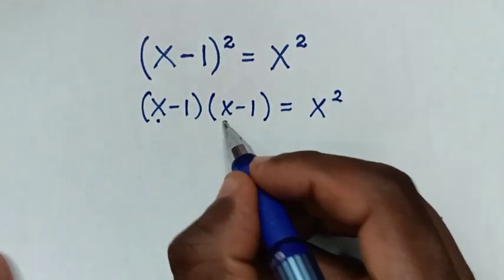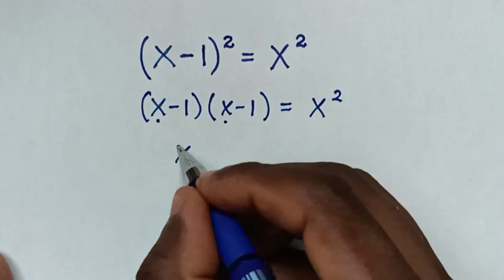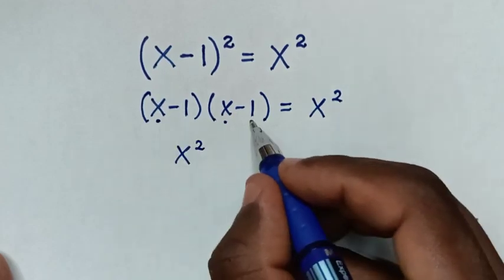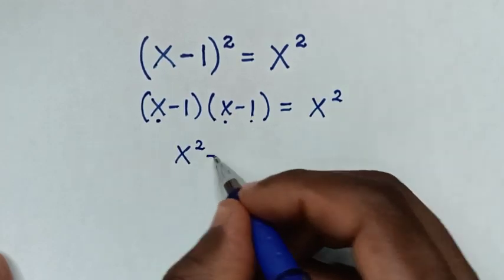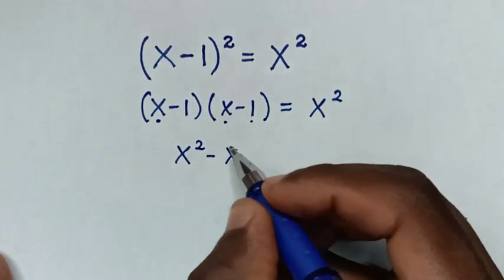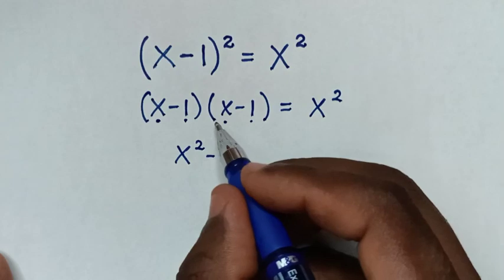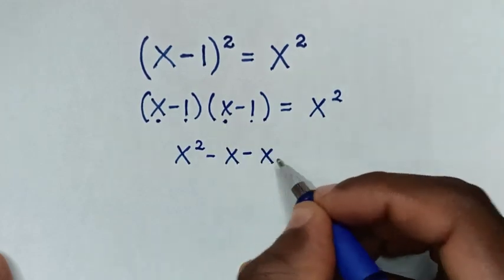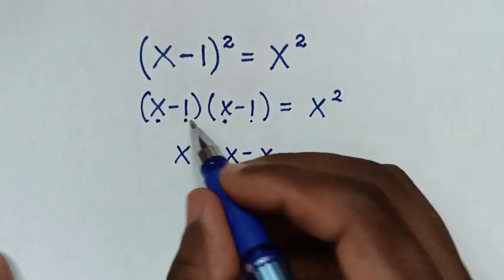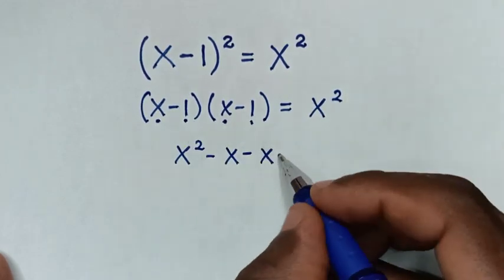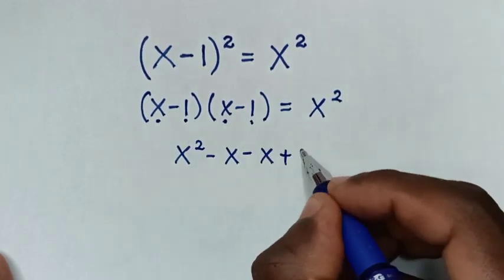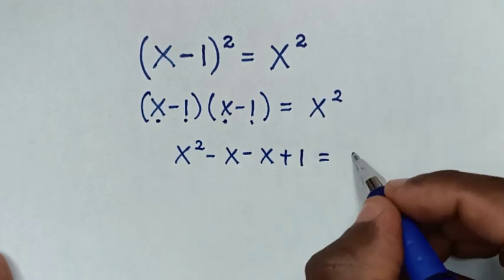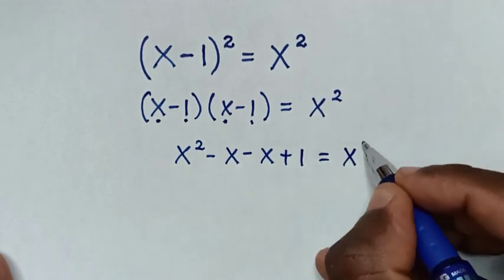Expanding: x times x is x squared, x times negative 1 is negative x, negative 1 times x is negative x, and negative 1 times negative 1 is positive 1. This all equals x squared.